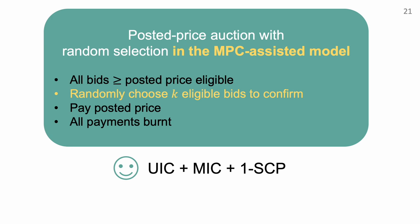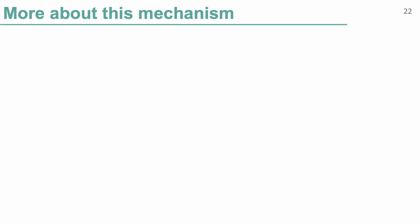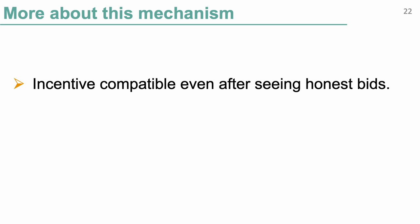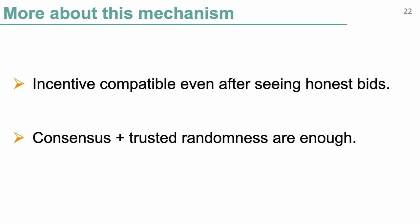There are some more interesting observations about this mechanism. All incentive compatibility properties still hold even if the coalition can decide their strategy after seeing honest users' bids — in game theory this is called exposed incentive compatibility. Partly due to this reason, for this particular mechanism we do not need a full-fledged multi-party computation, which can be very expensive. Instead, we only need a consensus among the group of miners to agree on the set of bids to consider, plus a trusted randomness to select the K confirmed bids. So this mechanism is potentially easy to implement.